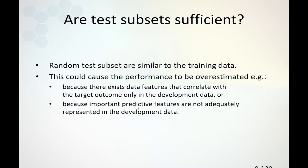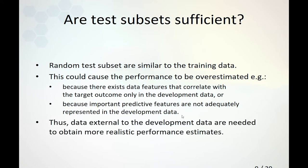It could also be that there is a lack of representability — important predictive features are not adequately represented in the development data. Therefore, we need data external to the development data to obtain more realistic performance estimates of our model.